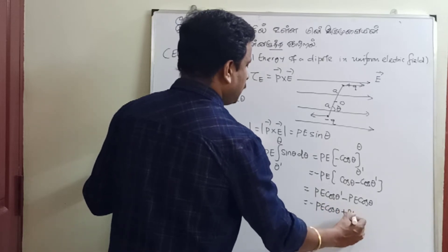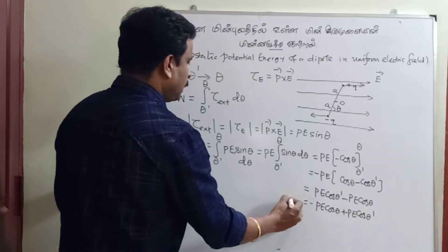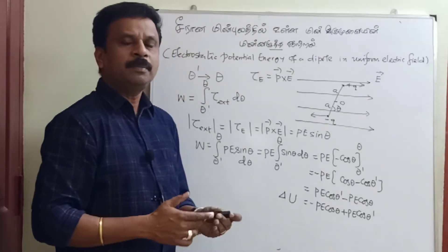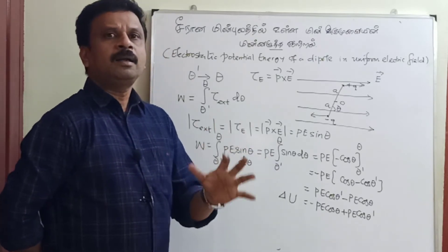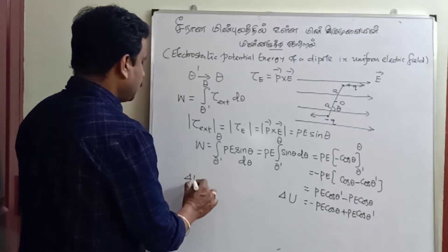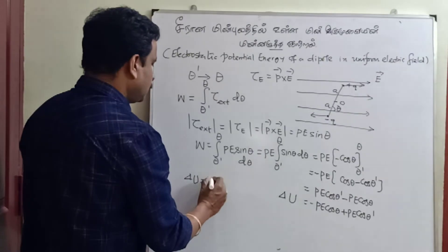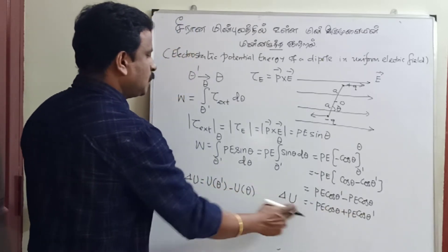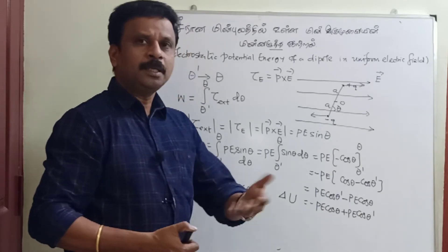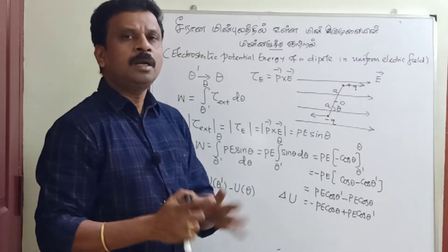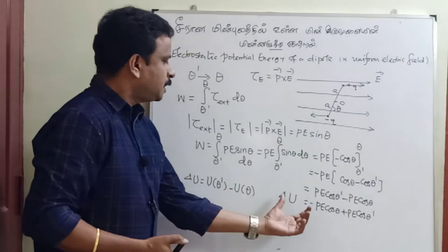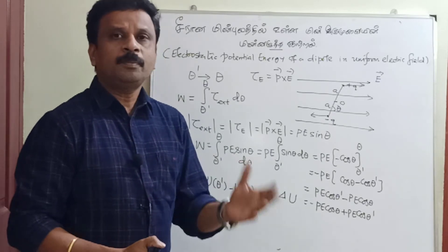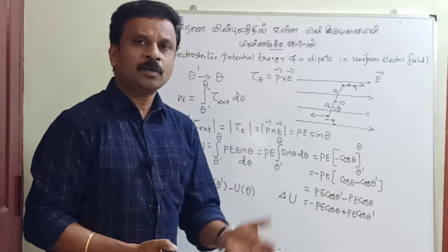We get plus pE cos theta prime. This is nothing but delta U — the change in potential energy between angle theta prime and angle theta. So delta U equals U(theta prime) minus U(theta). This represents the electrostatic potential energy difference between positions theta prime and theta.